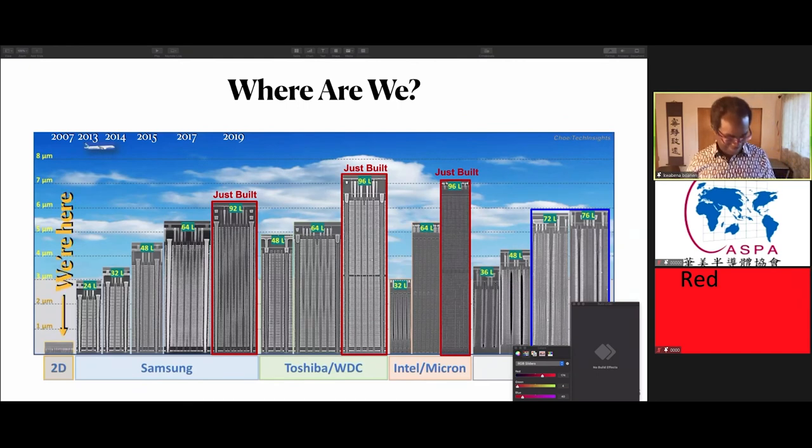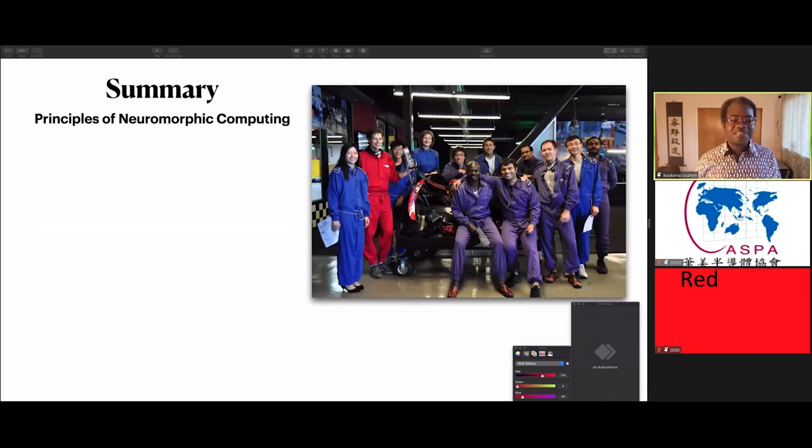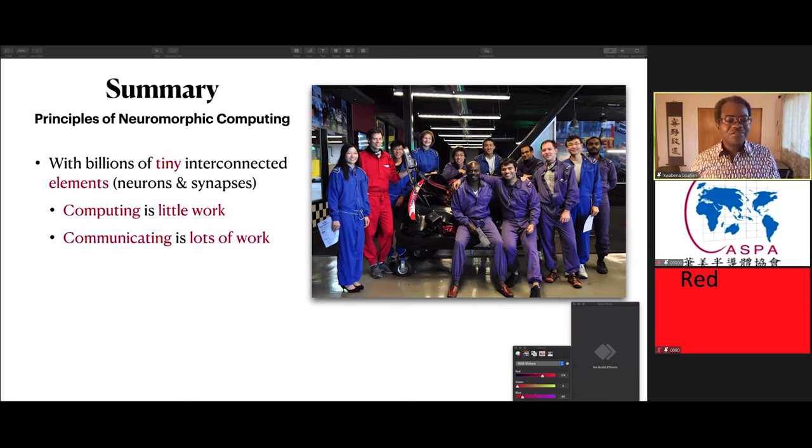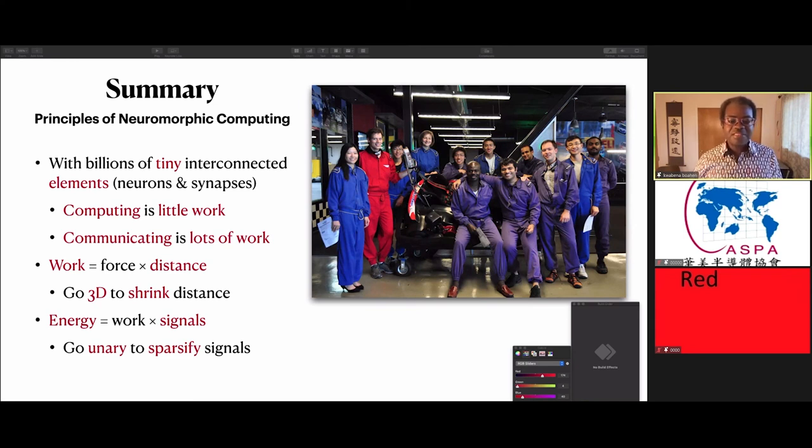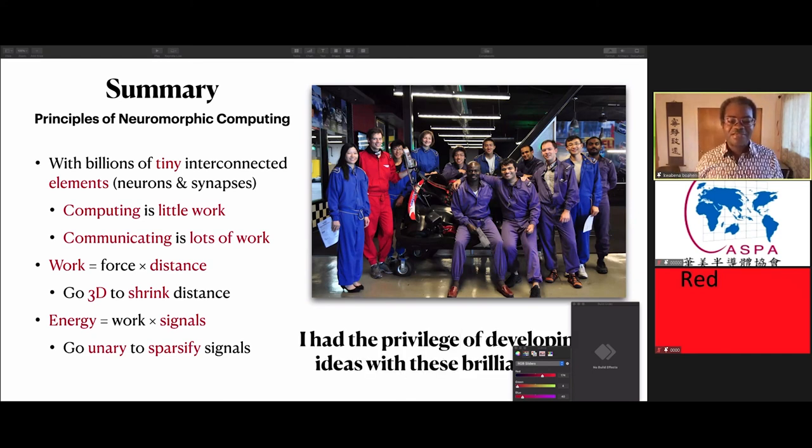Where are we now? We're actually just starting this journey here. We are just at the beginning, but hopefully by teaming up with the memory folks, we'll be able to realize this much faster. I'm going to summarize the principles of neuromorphic computing. They have to do with using billions of tiny interconnected elements to compute. Because these elements are tiny, computing is very little work, but because there are many of them, you have to transmit signals over long distances, so communicating is a lot of work. You can reduce those distances by going 3D, and you can make the signals fewer and sparser by using unary representation. I'd like to acknowledge these brilliant students I had the privilege of developing these ideas with, and I would like to thank you for your attention.